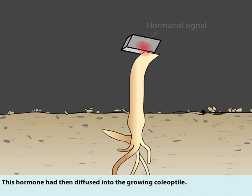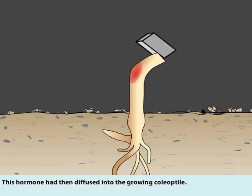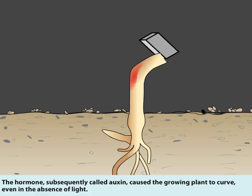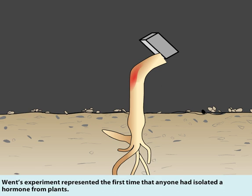This hormone had then diffused into the growing coleoptile. The hormone, subsequently called auxin, caused the growing plant to curve even in the absence of light. Went's experiment represented the first time that anyone had isolated a hormone from plants.